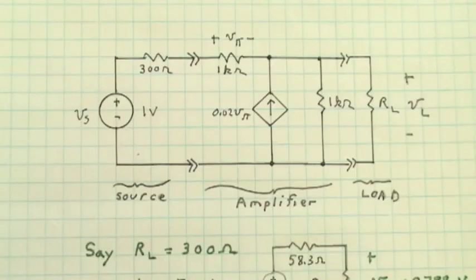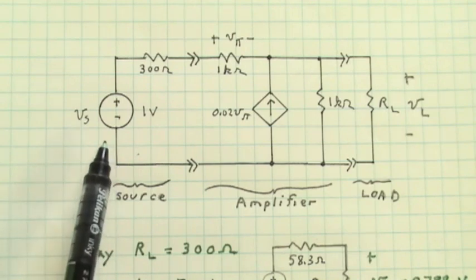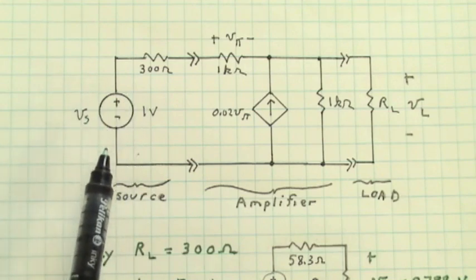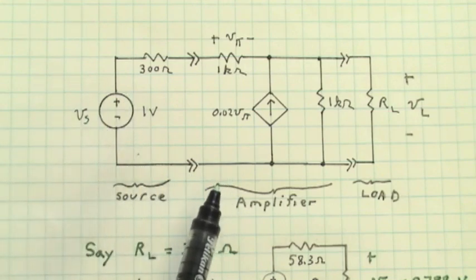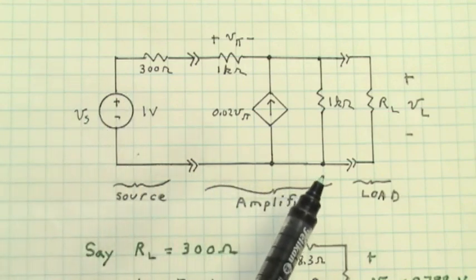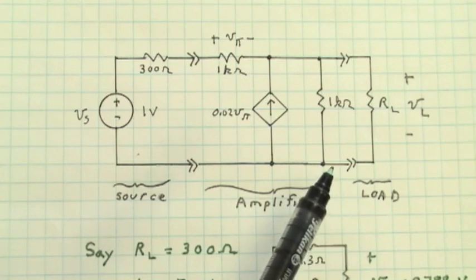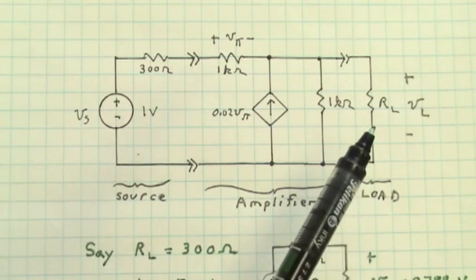Let's come back and take another look at the transistor amplifier circuit. I've redrawn it slightly, shown the VS and the 300 to represent a source circuit. And here's the amplifier. We can think of this as a two port interface circuit. And it's connected now to some load resistor.